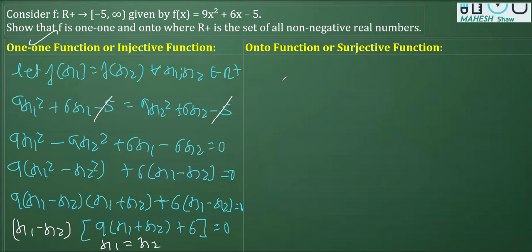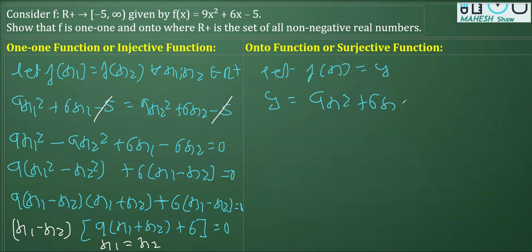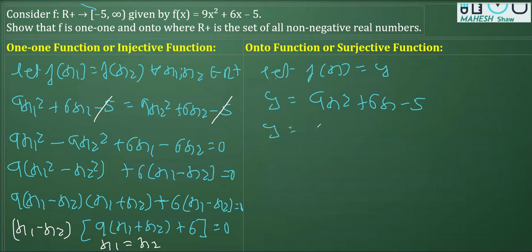Now to prove onto, we let f(x) = y. Replacing f(x), we get y = 9x² + 6x - 5. For every y that belongs to the codomain, we need to show there exists an x in ℝ⁺ — that means every y in the codomain has a pre-image in x. To do this, we use completing the square: we write 9x² as (3x)², so y = (3x)² ...